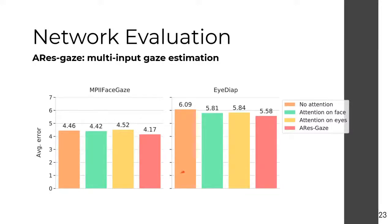We evaluated the effects of self-attention in each branch of the ARIS-Gaze framework by comparing the average angular error on both datasets. The face branch benefited more on average from self-attention than the eye branch. This aligns with our hypothesis, since on the face input there is relevant information in multiple regions, while on the eyes the gaze-relevant information is usually condensed to one region — the pupil. On both datasets, using self-attention on both branches simultaneously yielded the best results overall.